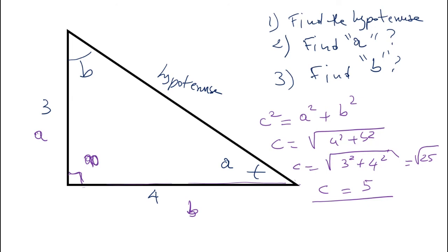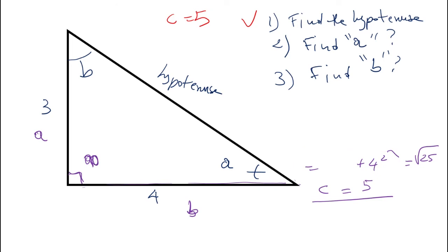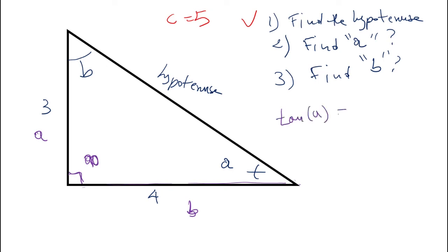The hypotenuse is 5. Now we need to find angle A. We have the two sides: the front side of A — the opposite — and the adjacent to A. In this case, we use the tangent of A, which is opposite over adjacent.